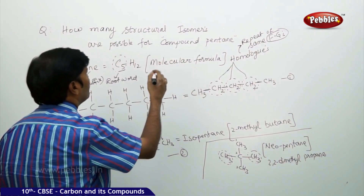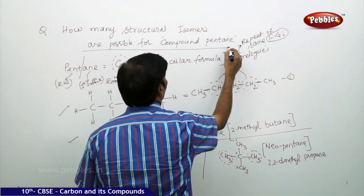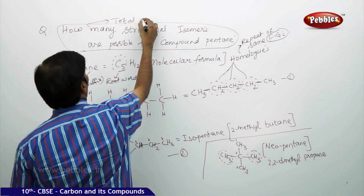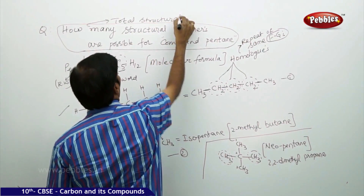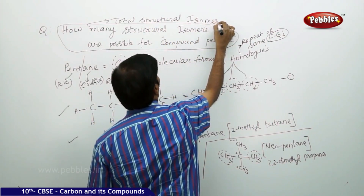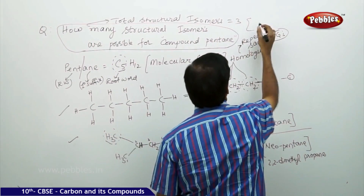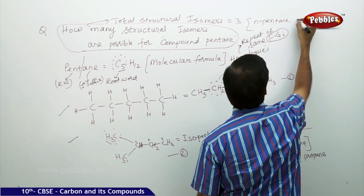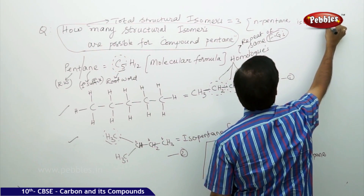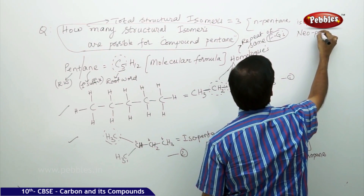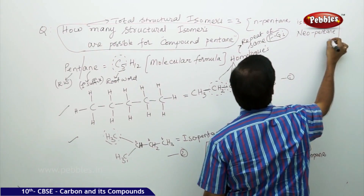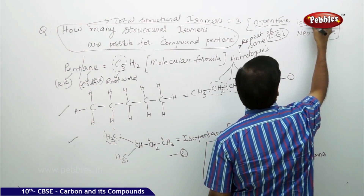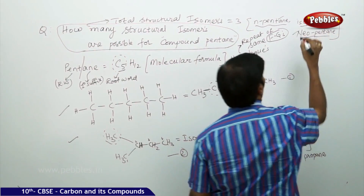So therefore, the answer for this question is: the total number of structural isomers is equal to 3. Those are n-pentane, isopentane, and neopentane. Three isomers are possible for the molecular formula C5H12.